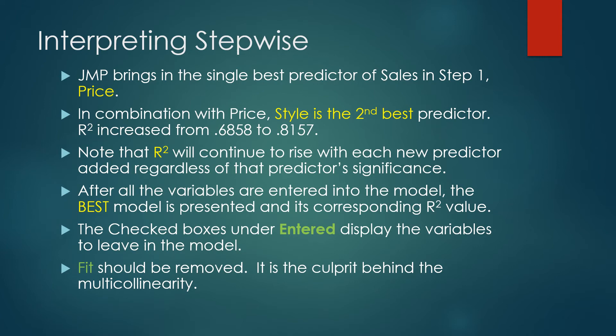So this slide reiterates what we just went through. Whatever variable comes in step one is your single best predictor of y. So that was price. Then in combination with price, it brings in style as the second best. And again, r-squared will continue to rise with each new predictor regardless of whether that predictor has significance or not. Then after all the variables are entered at the bottom, the best model is presented and its corresponding r-squared value. So we want to go back and rerun the model with only the predictors that are checked off within stepwise.